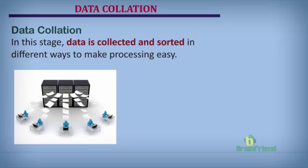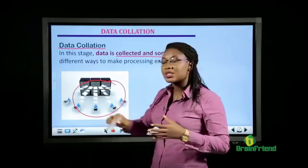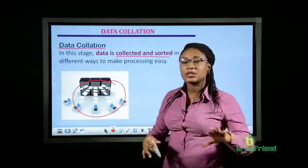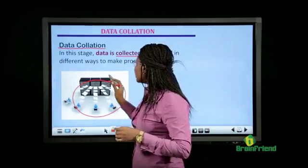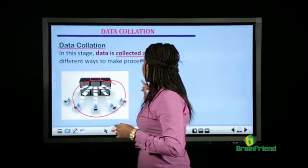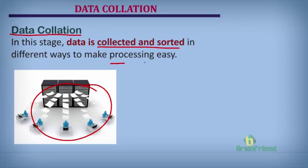After gathering your data, the next stage is data collation. By collation, we mean to collect and sort the data. You can sort data in diverse ways — you keep the ones that you need and discard the ones you don't need. Data collation makes processing easy.